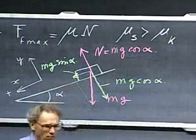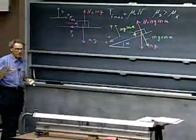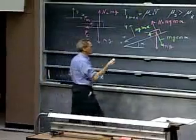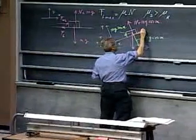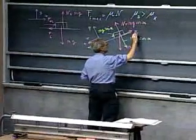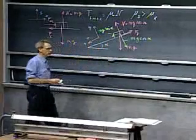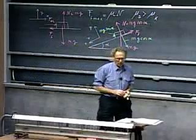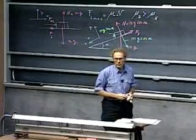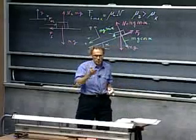Now this object wants to slide downhill. Friction prevents it from doing so, so there's going to be a frictional force in this direction. And as I increase the tilt, this frictional force will get larger and larger and larger, and then there comes a time that the object will start to slide.